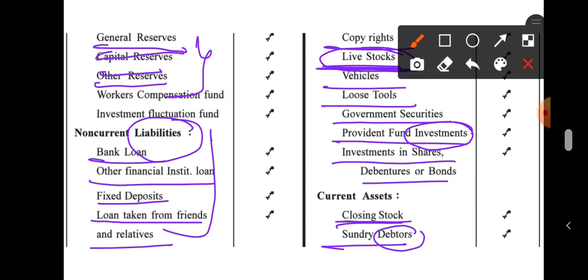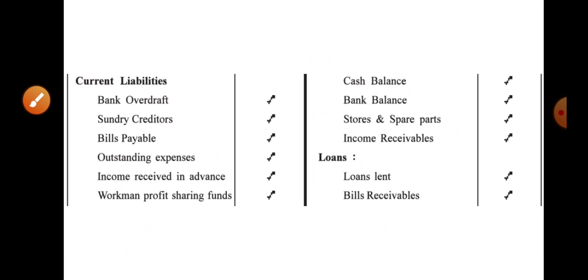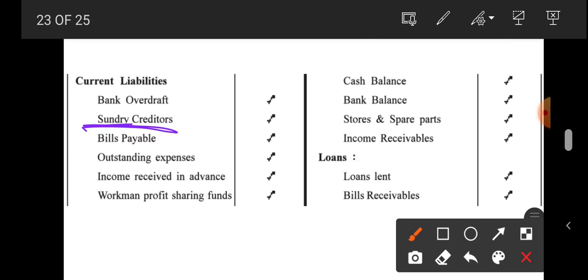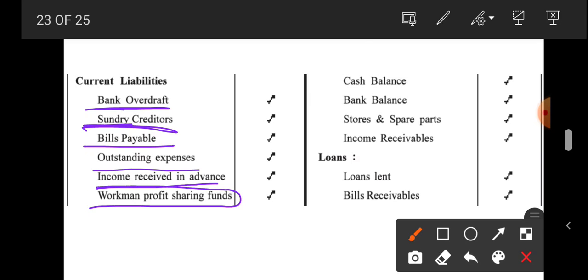Sundry debtors — those from whom money is to be received — are assets. Those to whom money is to be paid are creditors, and creditors come under liabilities. Sundry creditors are liabilities, bank overdraft is also a liability, bills payable is a liability, outstanding expenses, income received in advance, and workman profit sharing fund — since that belongs to the workers — are all liabilities.